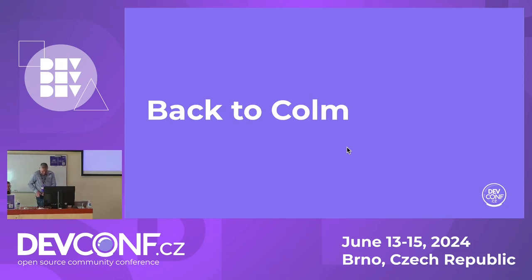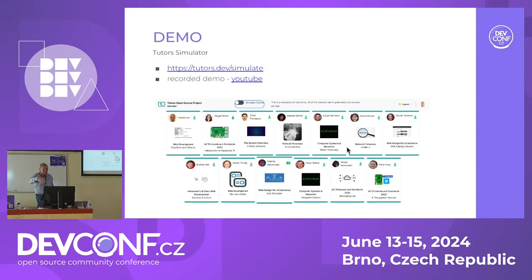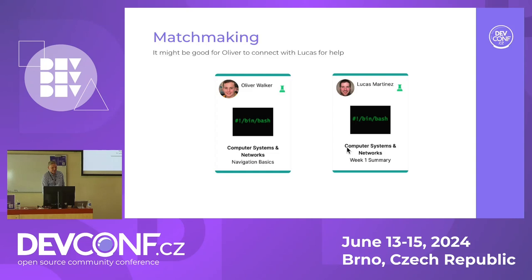So Clodagh took you through how the simulator was built and all the technology behind it. I just want to rewind a little bit. If you look at the screen and try to find a match — who would you match? Those two. So it might be good for Oliver to connect with Lucas for help, because they're working on the same area. One is on the summary, the other is just a step back. So it'd be good for Oliver to ask Lucas for help on the problem he's having.